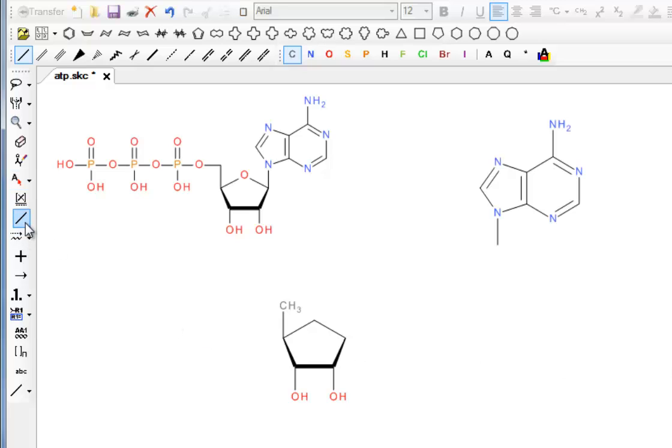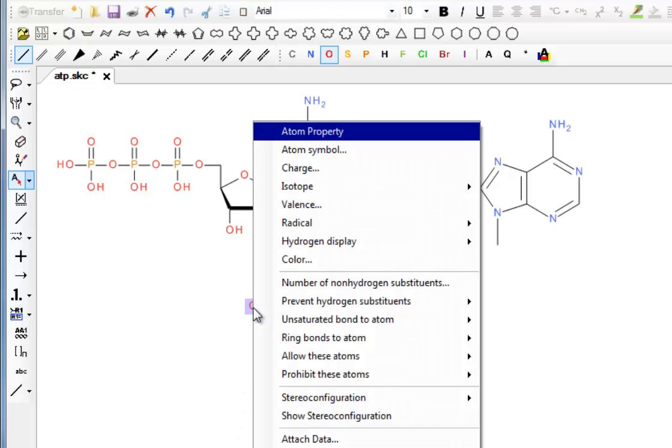We want an OH group attached to that, so I'm going to put a bond in there. The hydrogens have moved a bit. We'll come back to them in a second. I want an OH in here, which is the usual way we convert into an OH.